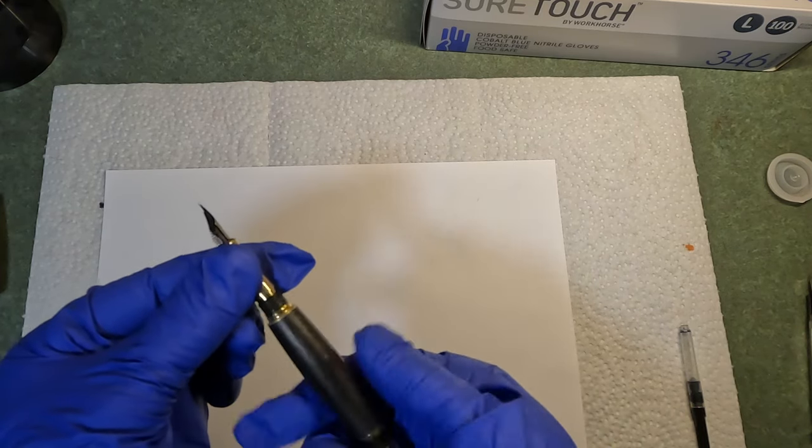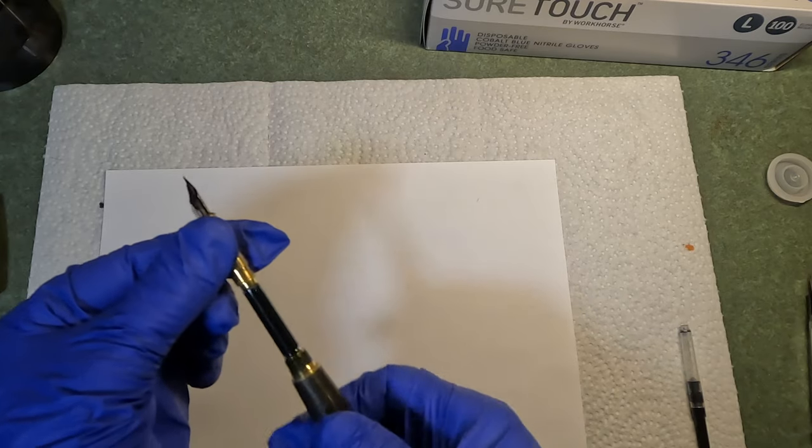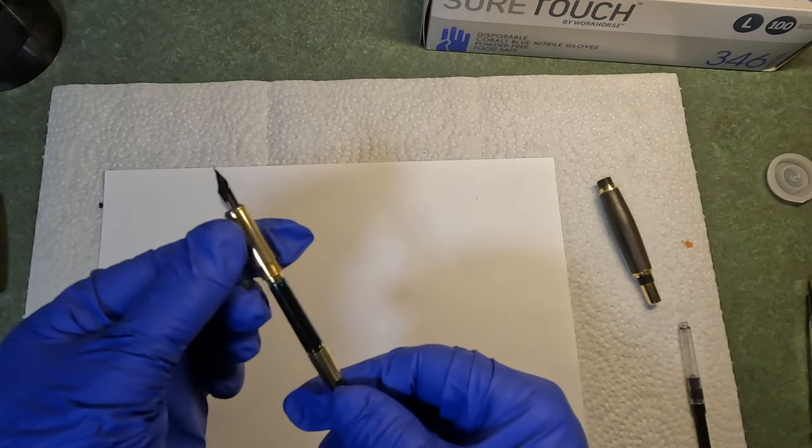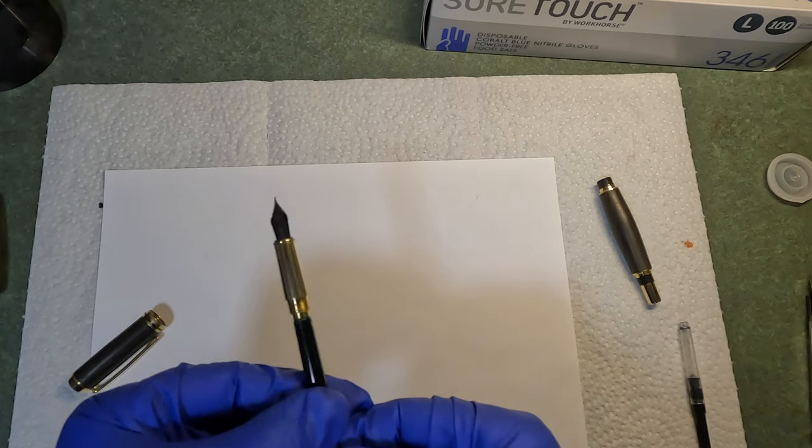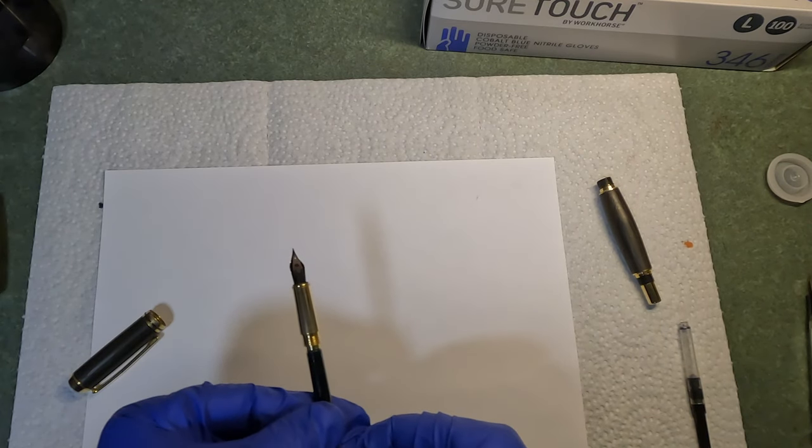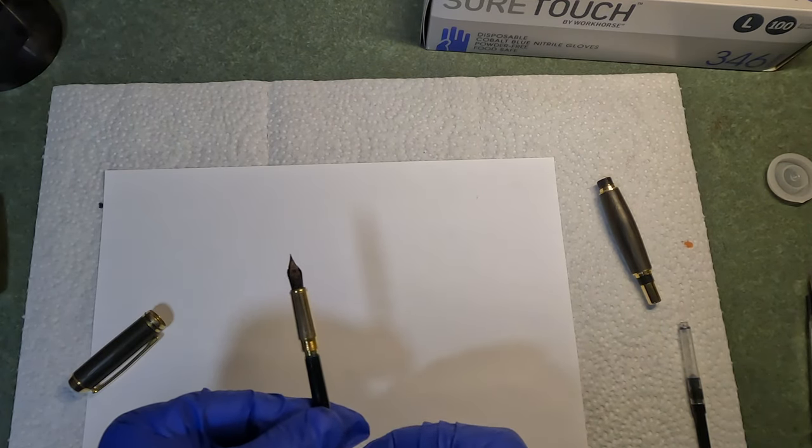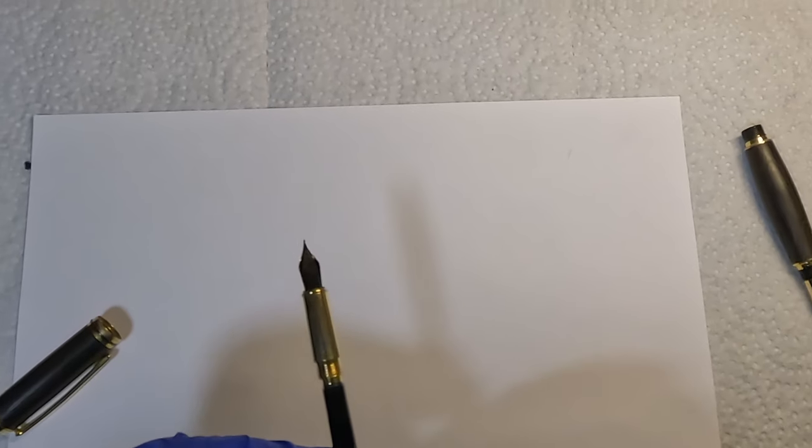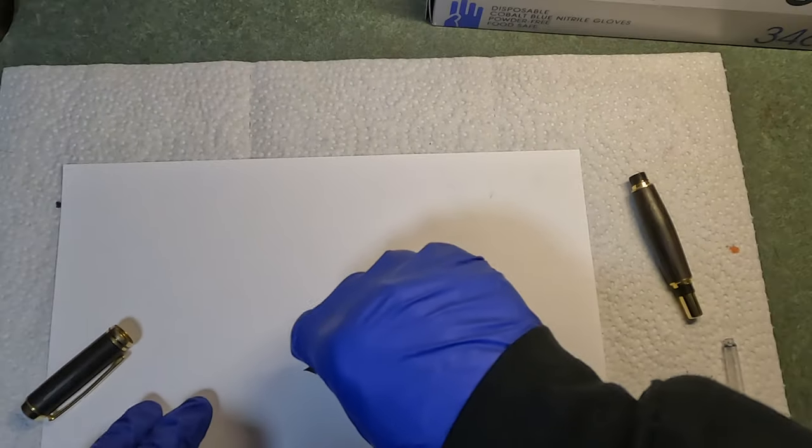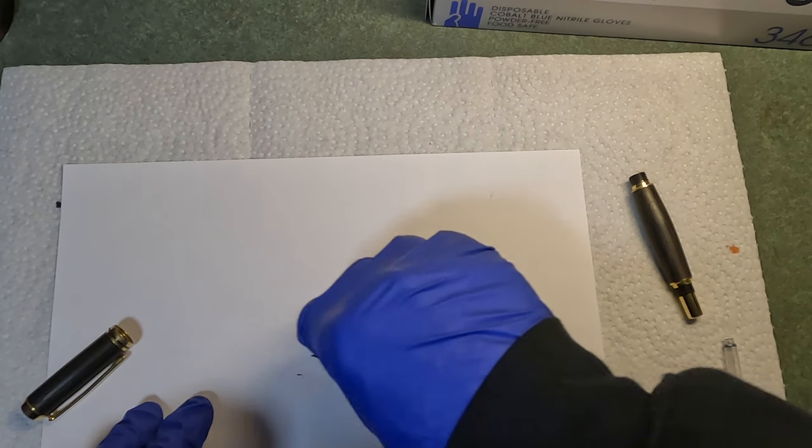So the way to resolve that is I'm going to turn the piston, and I'm going to force some ink into the fins, watching the fins closely. And there, starting to see some ink flowing. Okay. So now let's try it. There we go.